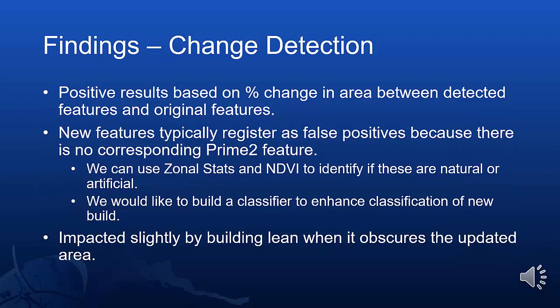Our findings focused on two areas. The first was using the detected features as a source of change detection, and this gave us very positive results even based on a simple area change value between the detected features and the original features. New features we discovered typically registered as false positives because there's no corresponding Prime 2 feature. We were able to use zonal stats on the NDVI to identify if these were natural or artificial and filter them that way. We would also like to build a classifier going forward to try and enhance this classification of new build features.